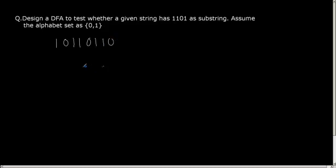This string should be accepted by the DFA we are going to design because this string contains a substring 1101. How will we proceed?